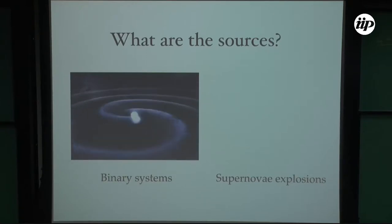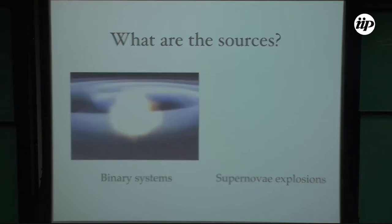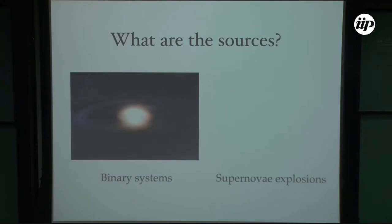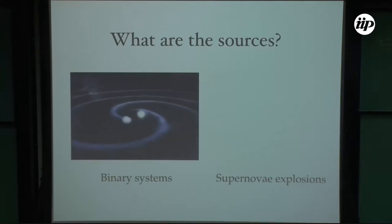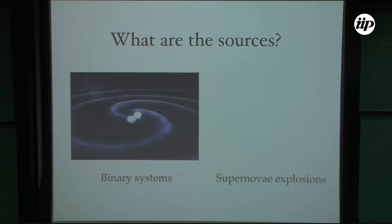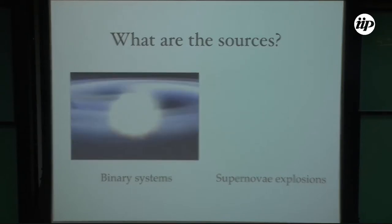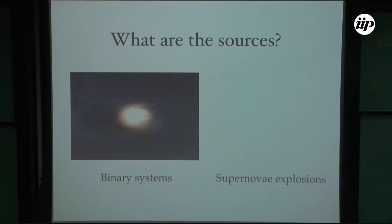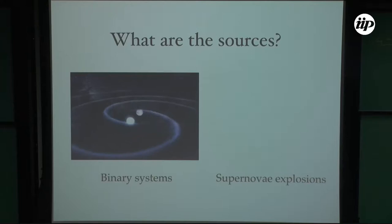Detecting a gravitational wave is extremely difficult because they're very weak. You don't need to know nuclear physics to detect the sun — the signal-to-noise ratio is so huge. In the case of gravitational waves, you really need to use very powerful techniques. One way, as you probably learned in data analysis, is to use templates, which can be extremely useful in confirming detection and extracting parameters such as the characteristics of the source.